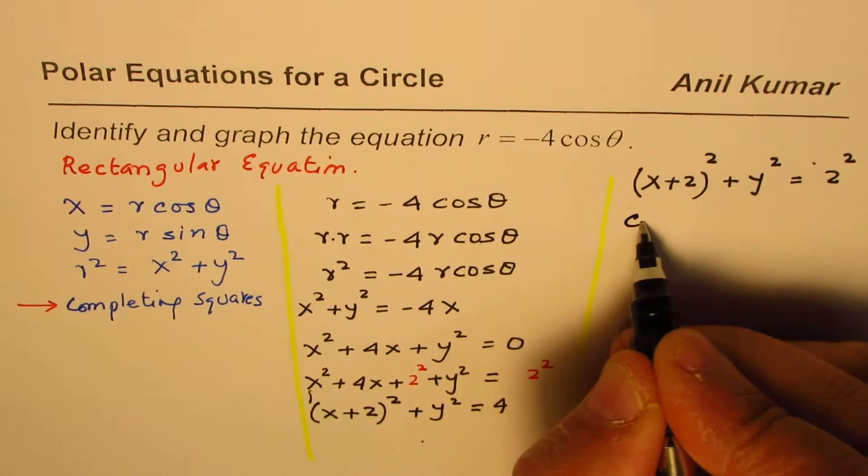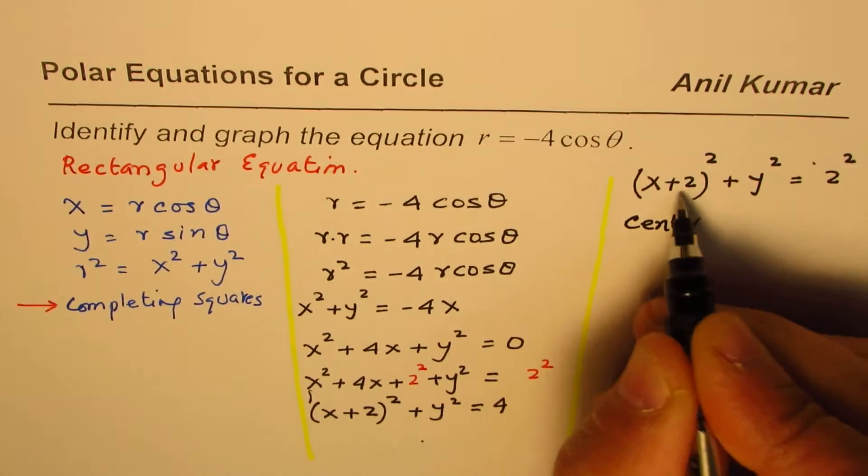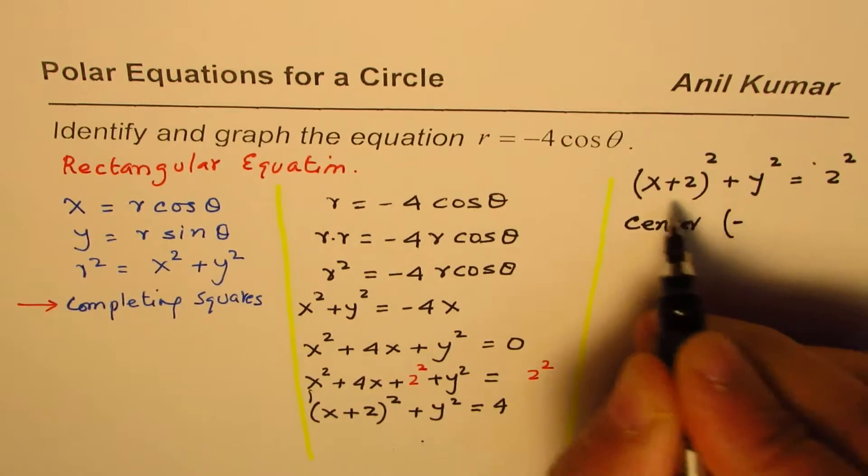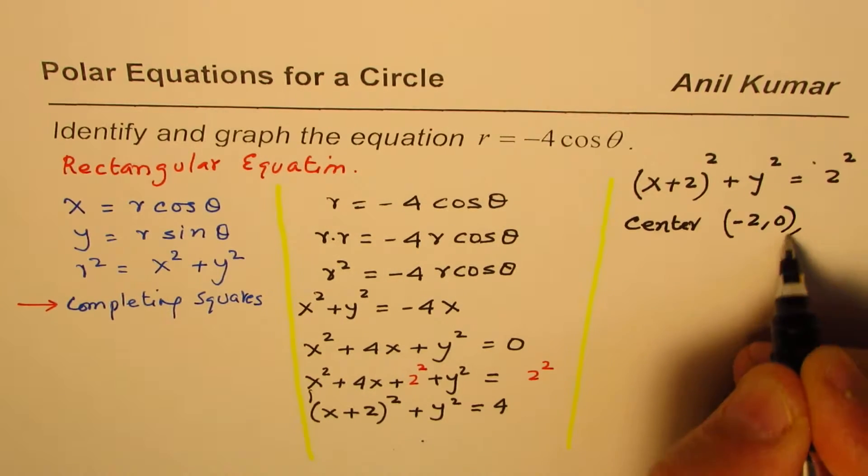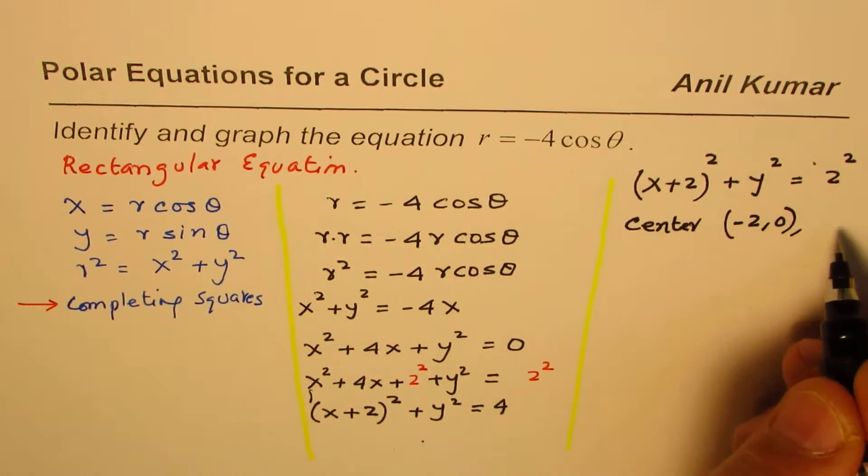And the center of the circle is... Center of the circle is at minus 2, 0. Is that okay? And the radius is 2 units.